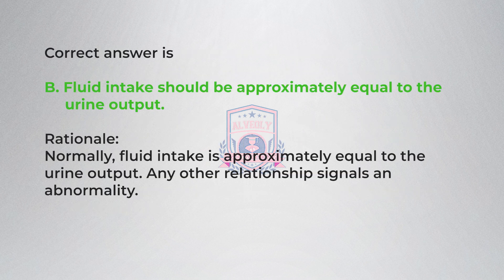Correct answer is B, fluid intake should be approximately equal to the urine output. Rationale: Normally, fluid intake is approximately equal to the urine output. Any other relationship signals an abnormality.